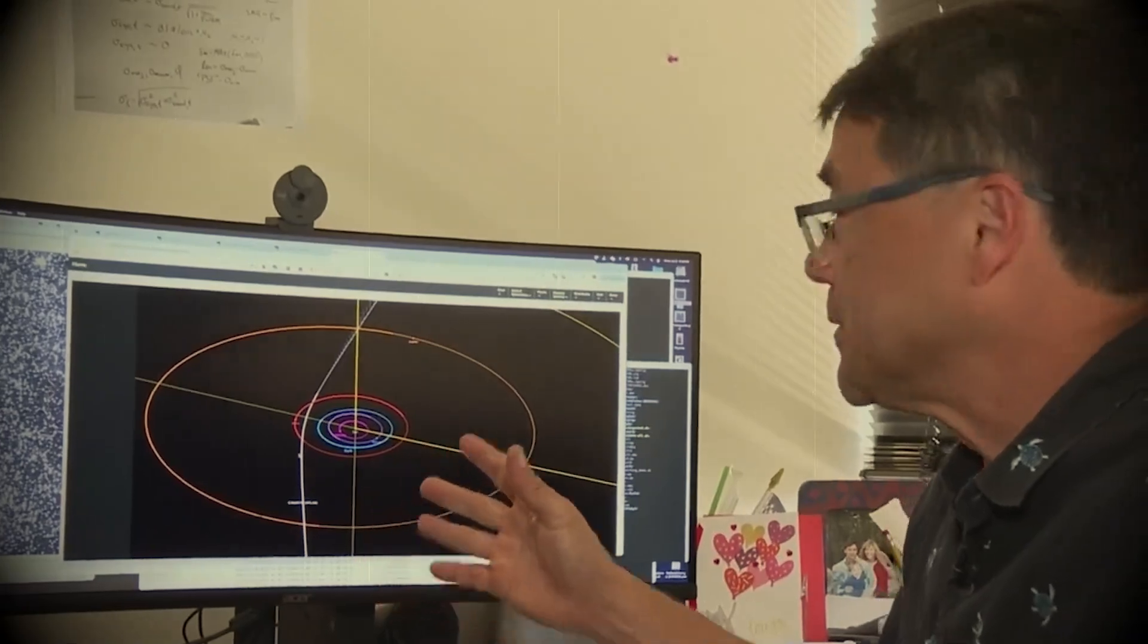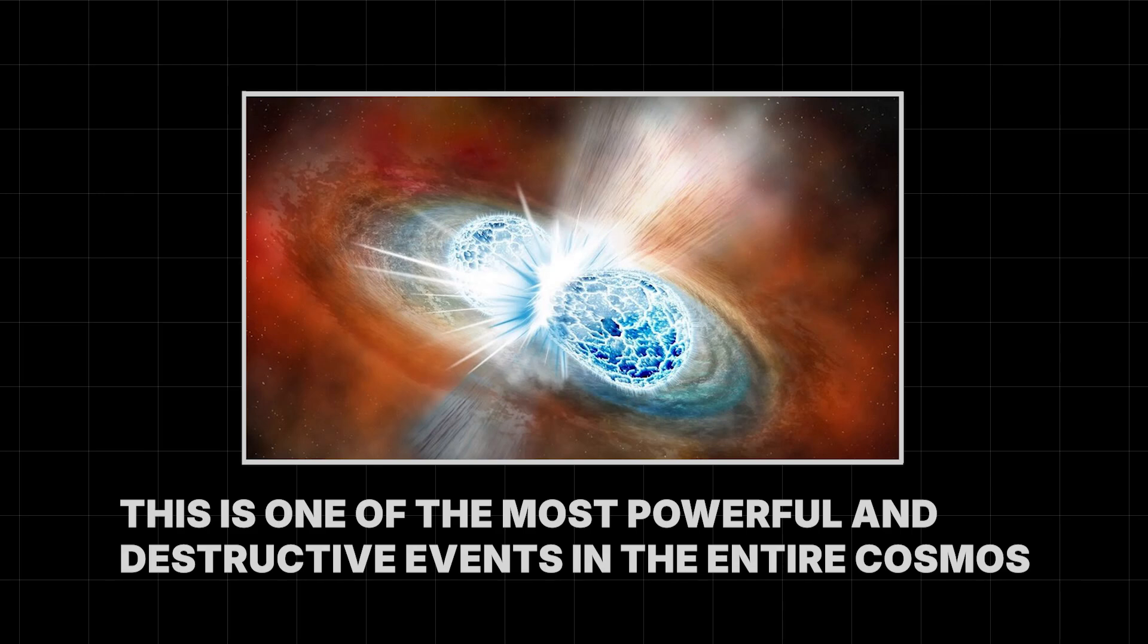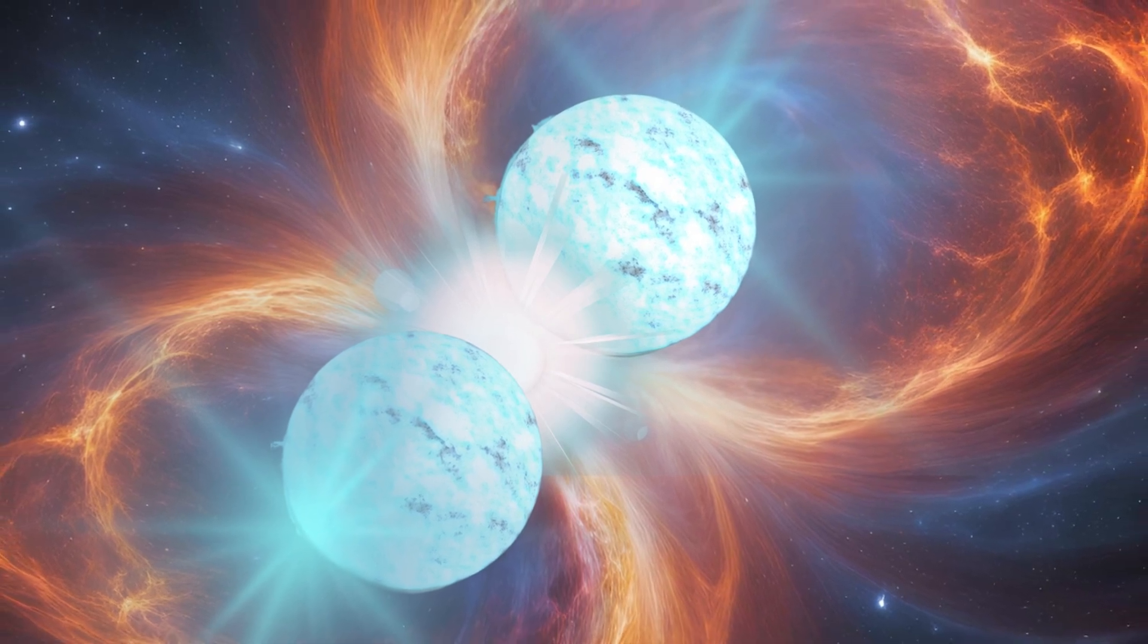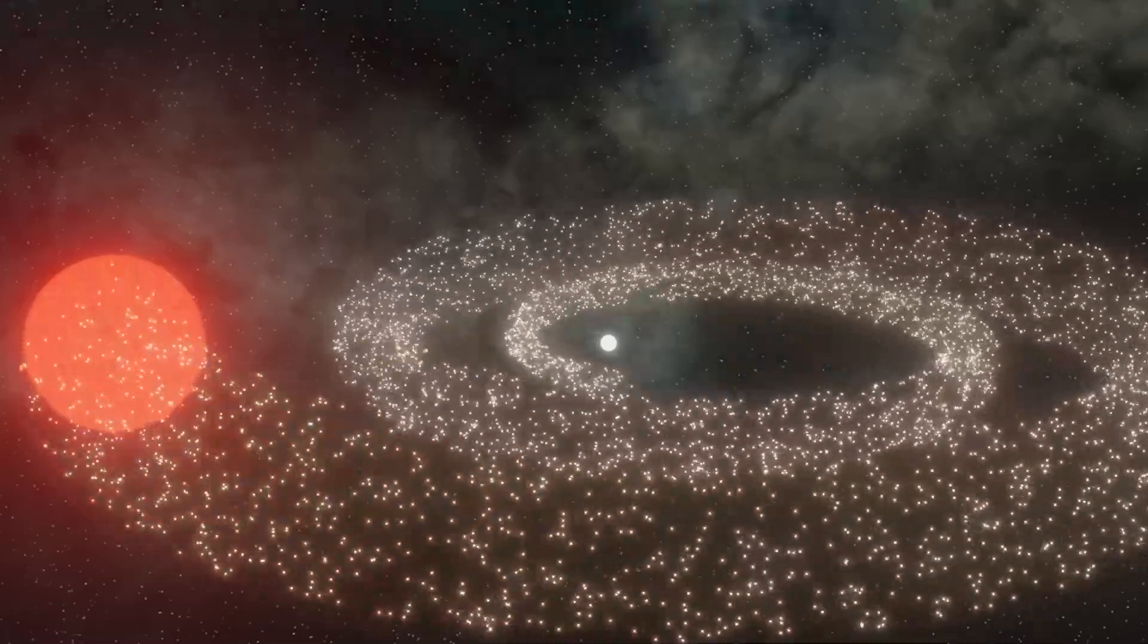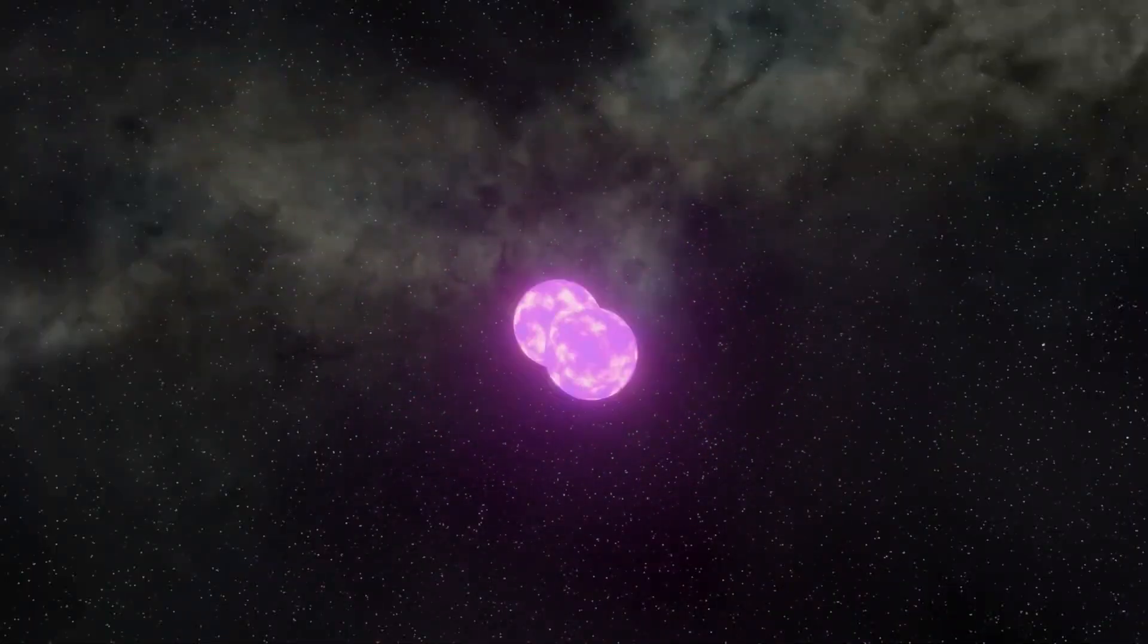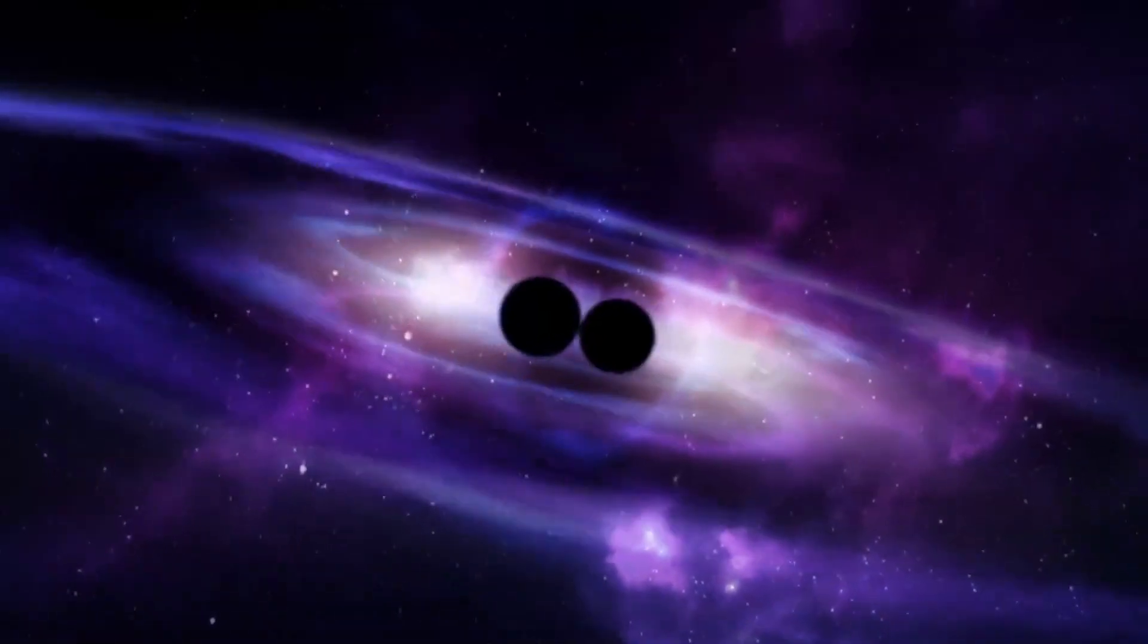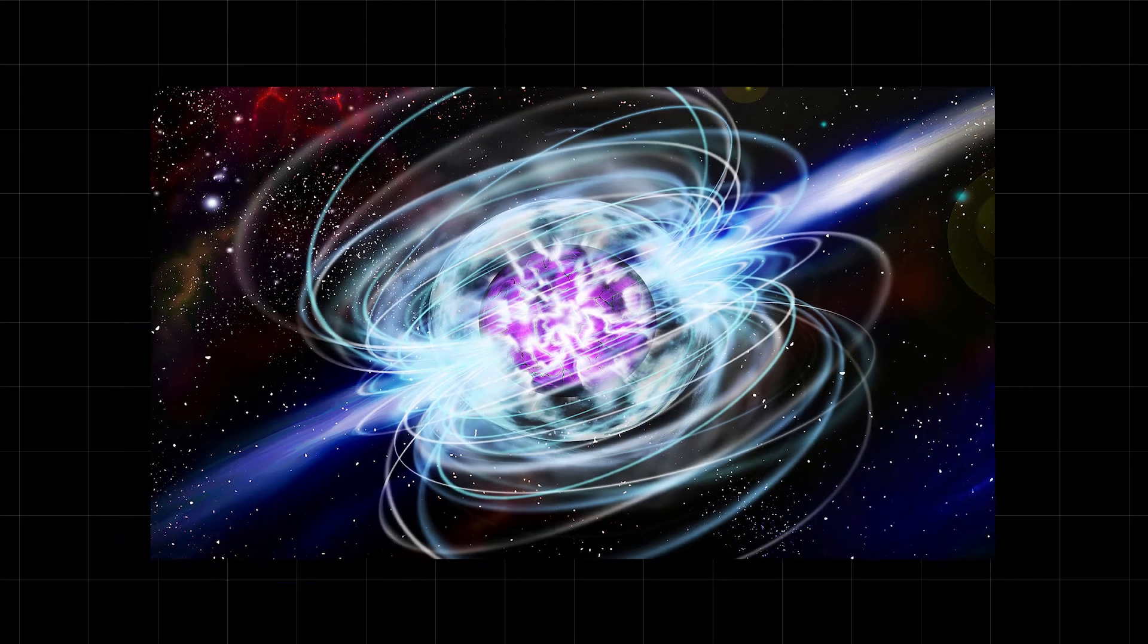One of the leading theories points to an event called a kilonova. This is one of the most powerful and destructive events in the entire cosmos. It happens when two neutron stars, the super-dense dead cores of massive stars, spiral into each other and merge. Imagine two objects, each more massive than our sun, crushed down into a space the size of a city. Now imagine them spinning around each other thousands of times a second before slamming together. The explosion that results is a thousand times brighter than a regular nova. In this cosmic furnace, the laws of physics are pushed to their limits. The energy is so intense that it can forge the heaviest elements in the universe, like gold and platinum. And according to some models, it could also create pockets of pure nickel, ripped away from iron in the chaos.